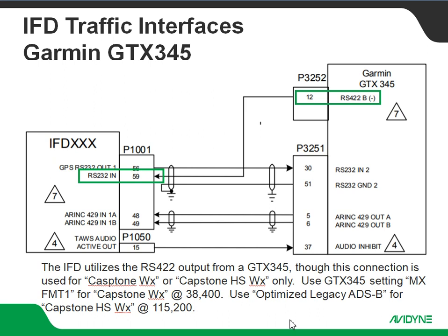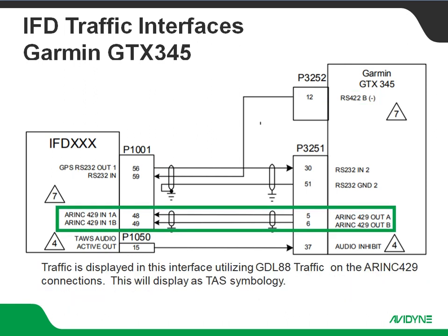It doesn't really matter which one you pick, but make sure it's set accordingly on both ends. Just to reiterate: if we're going to do MX format one out of the GTX 345, we're going to set the IFD for straight capstone weather. If we're going to use optimized legacy ADS-B out of the GTX 345, we're going to set the IFD side for capstone high-speed weather. We also have an ARINC 429 output from the GTX 345 coming back into the IFD — this is where the traffic comes across. On the IFD side, we're going to set that up for GDL 88 traffic on that ARINC 429 input.